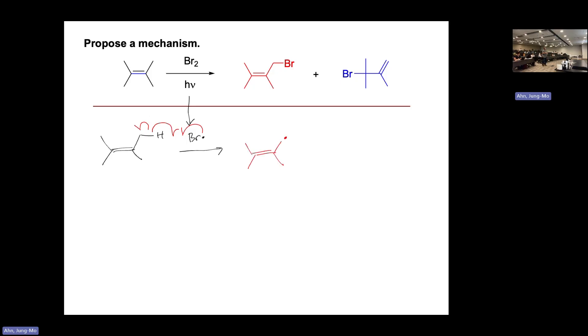So bromine abstracts hydrogen. If these come in with one electron, then the one electron there, they make a bond. That leaves this carbon with one electron, so you are forming a radical. So that's the first propagation step, something that we expect.